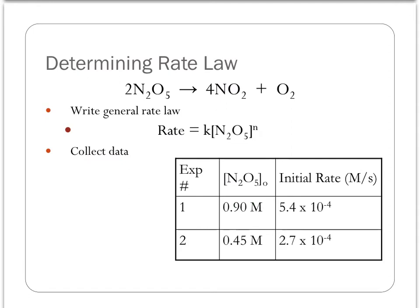Let's take a look at some actual data for a real reaction: the decomposition of dinitrogen pentoxide to nitrogen dioxide and oxygen gas. The reaction is already balanced. On a side note, the way a reaction is balanced is not going to have a lot to do with the orders we determine as we derive the differential rate law. Step one: write down the general rate law. All rate laws start with the word rate, an equal sign, the letter K, and then the concentration of each reagent raised to some unknown order — in this case I only have one, N2O5, raised to the unknown order N. Our mission is to find the value of N and the value of K.